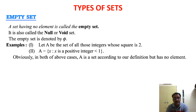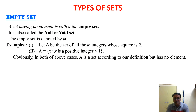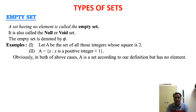The first type is the empty set. Empty means it has no elements — zero elements. It is also known as a null set or void set, and it is denoted by the letter phi. For example, let A be the set of all integers whose square is 2, or x such that x is a positive integer less than 1. In both cases there is no element, so these are called empty sets.